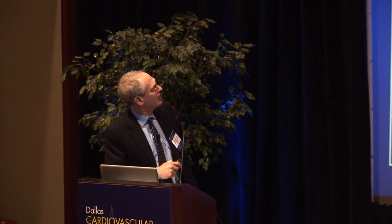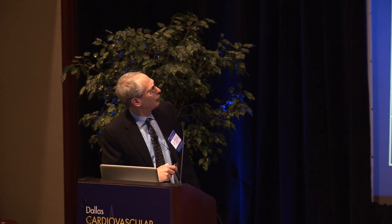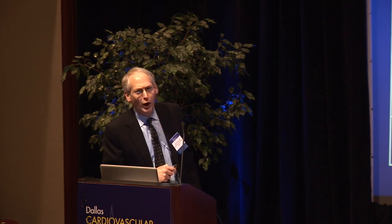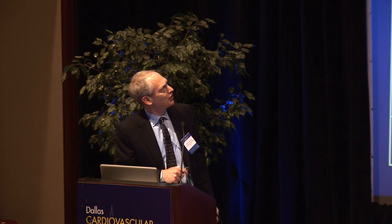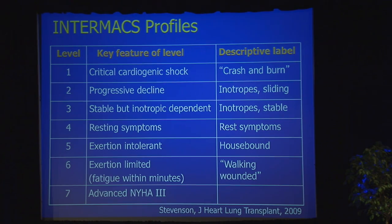Those profiles are shown here, and there are seven of them. The first one is INTERMACS profile one, critical cardiogenic shock. They came up with really nice, descriptive labels — this group is called the crash and burn group. These are patients who, if you don't intervene within hours or maybe a day, they'll be dead.